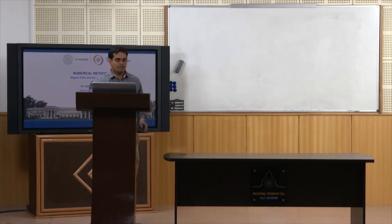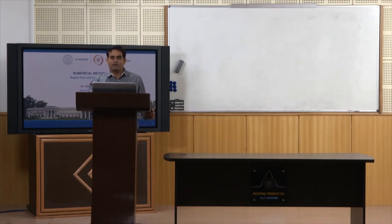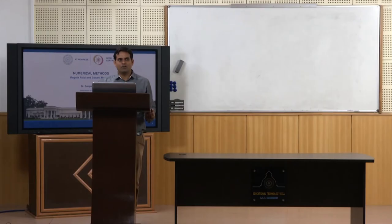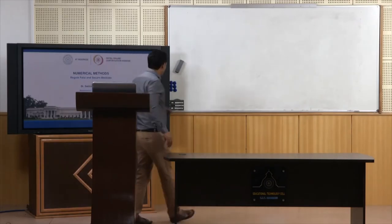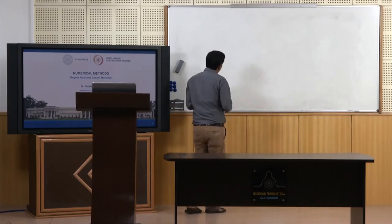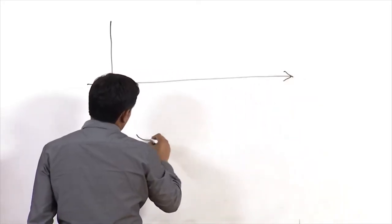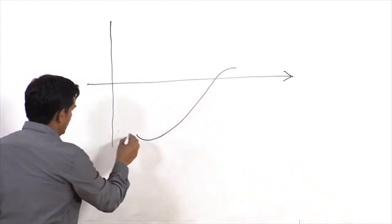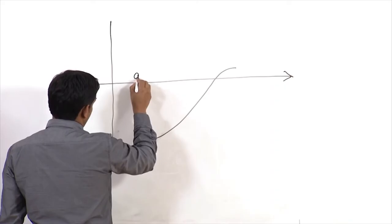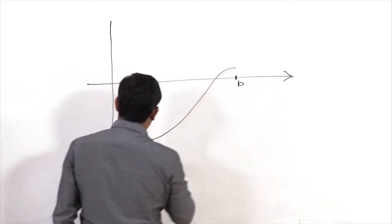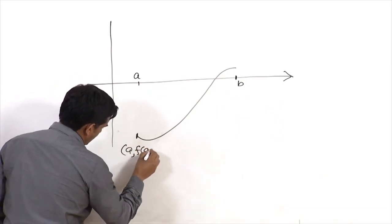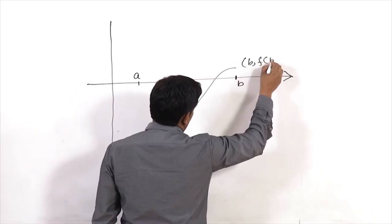In the last class we learned about the bisection method for solving non-linear equations. In the bisection method we take the next iterate as the midpoint of the two endpoints of the initial interval in any iteration. Consider a particular scenario where we have a function with point A (with value f(A)) and point B (with value f(B)).